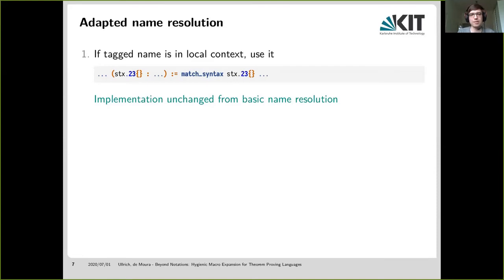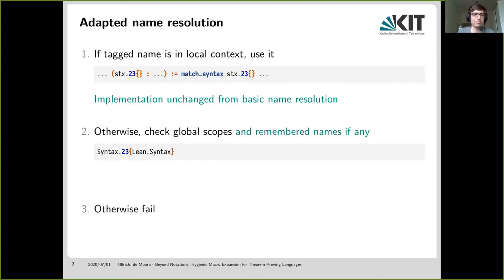And then there is the second step. If local check didn't work, we check the global context instead. And at this point, we also check the remembered names if we have any of them. So in the case of the syntax reference, we probably don't have syntax.23 itself in the global context, except if the same macro actually introduced this declaration. But we do still have our remembered name, Lean.syntax. So at this point, we will use that and reference Lean.syntax for this variable reference. And yeah, as a third step, if neither local or global check worked, then we simply fail as usual.